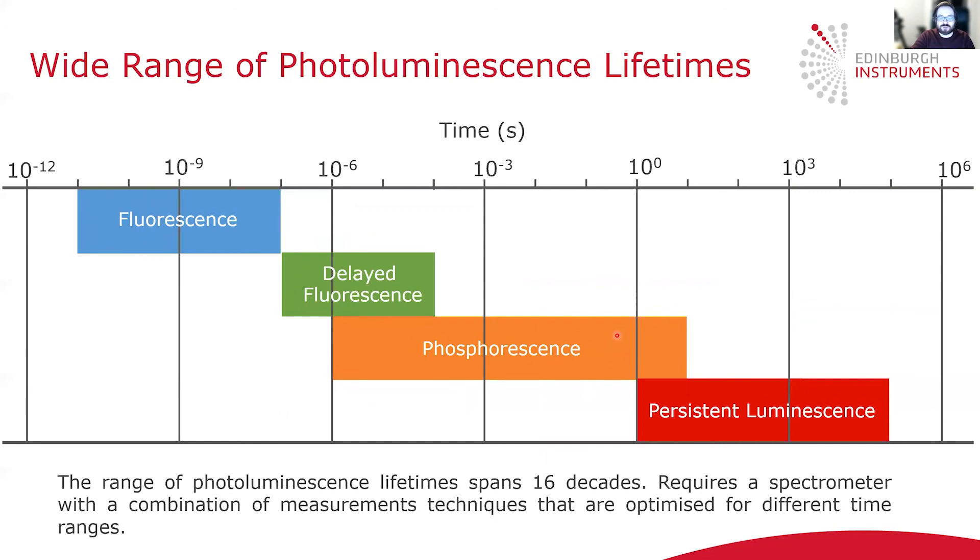So I've explained the four main types of photoluminescence that are encountered. The thing to know is that these cover a very wide time range. We have 10 picosecond lifetimes being about the shortest fluorescence lifetime, and then persistent luminescence phosphors can have lifetimes on the hundreds of hours.